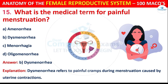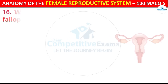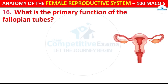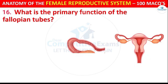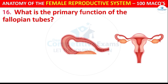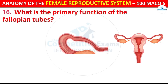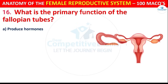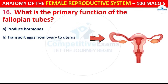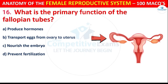Question number 16: What is the primary function of the fallopian tubes? Options are: Produce hormones, Transport eggs from the ovary to the uterus, Nourish the embryo, or Prevent fertilization.